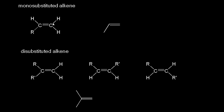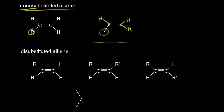You can classify alkenes according to their degrees of substitution. If you take ethene, take a hydrogen off, and add on an R group, you now have a monosubstituted alkene. On the right is an example of a monosubstituted alkene. This carbon has two hydrogens, and this carbon has one. We have an alkyl group — a methyl group — coming off of this carbon, so this is an example of a monosubstituted alkene.